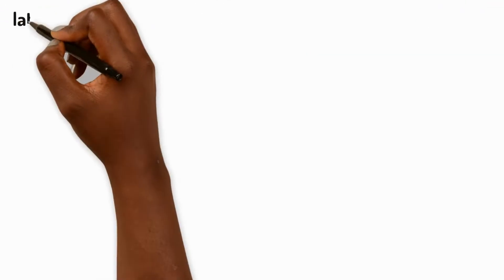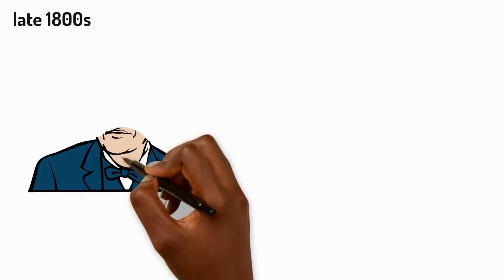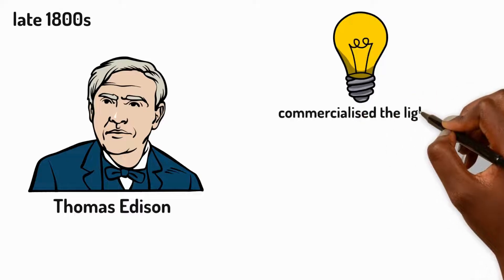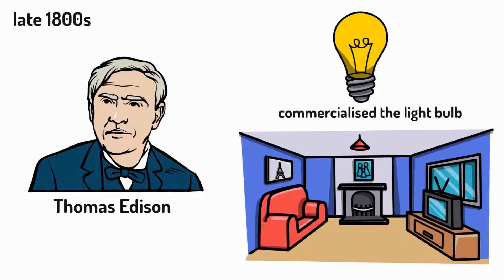In the late 1800s, an American inventor, Thomas Edison, commercialized the light bulb. And this changed indoor lighting and made electricity easier to use in the home.